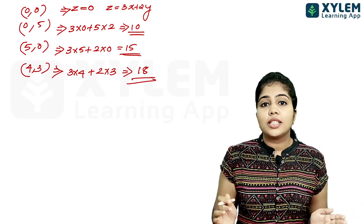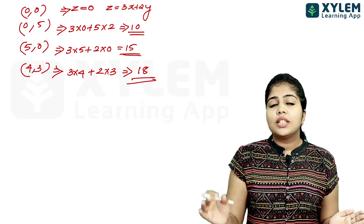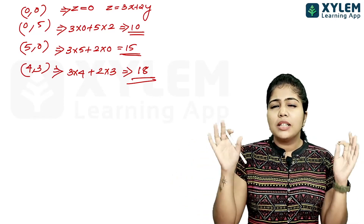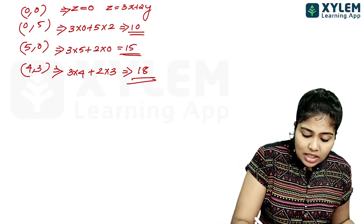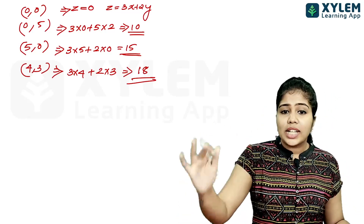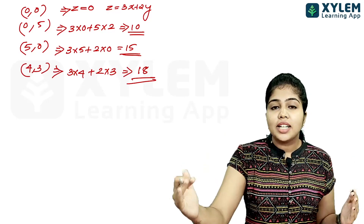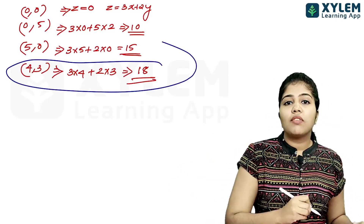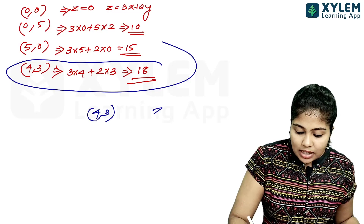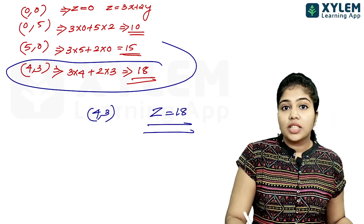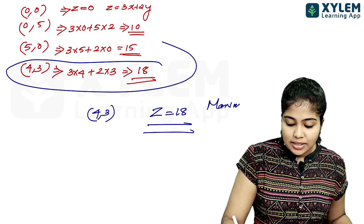We compare the values at the four corner points: 0, 10, 15, 18. The maximum value is 18, achieved at the point (4, 3). So the maximum value of z is 18.